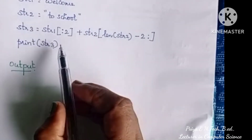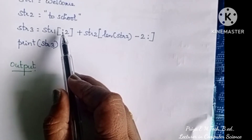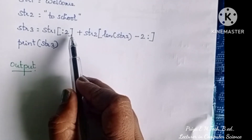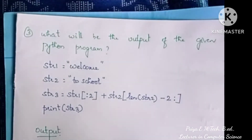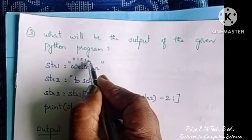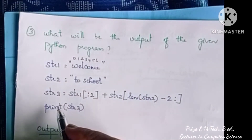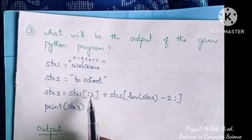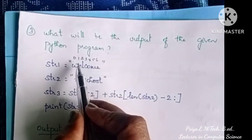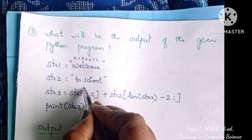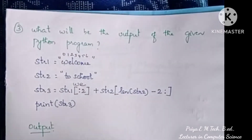str3 is equal to the ending value. str1 slicing with index values. The starting index is 0 and ending is 1, so we get 'w' and 'e'. So str1 from index 0 to 1 gives us 'we'. That is the answer — 'we'. Correct?